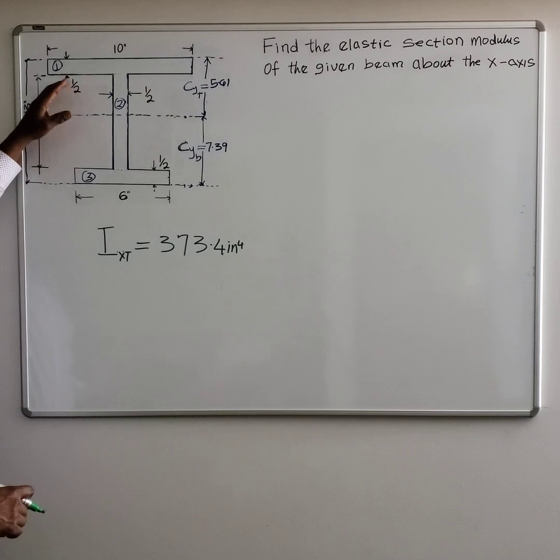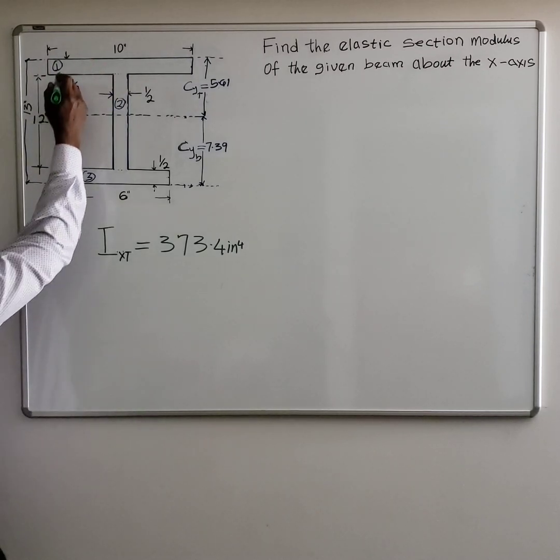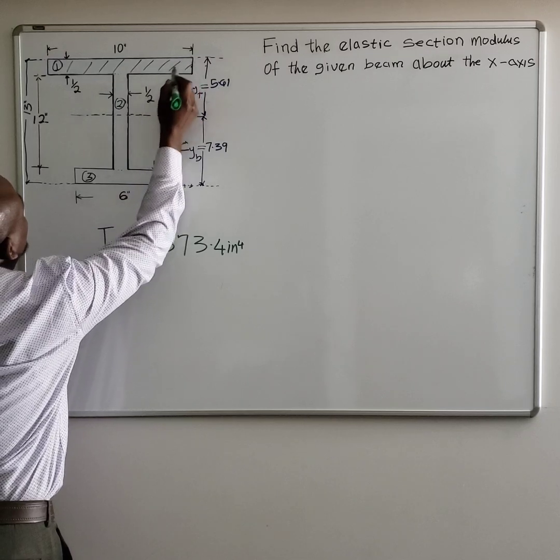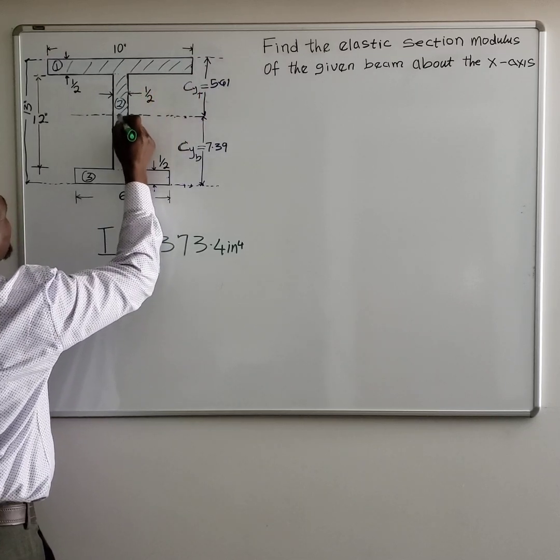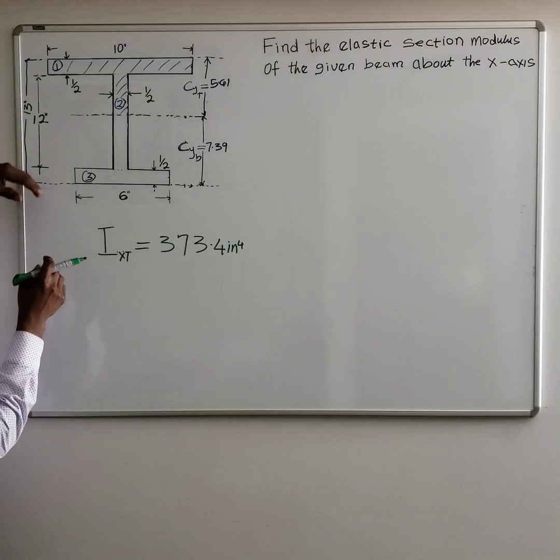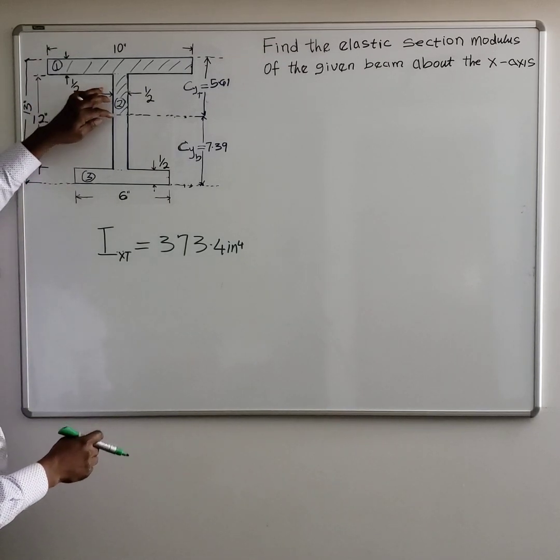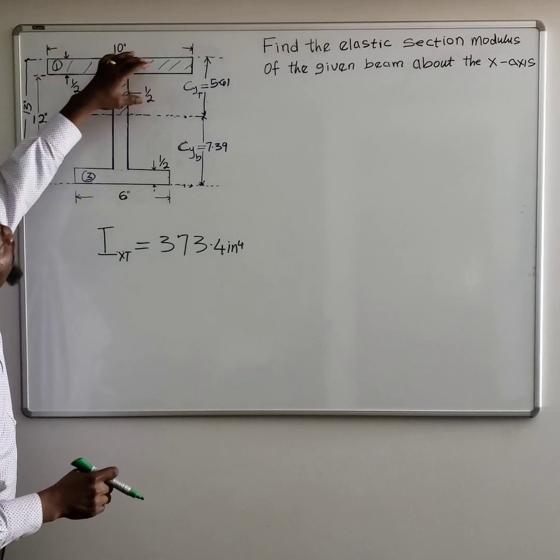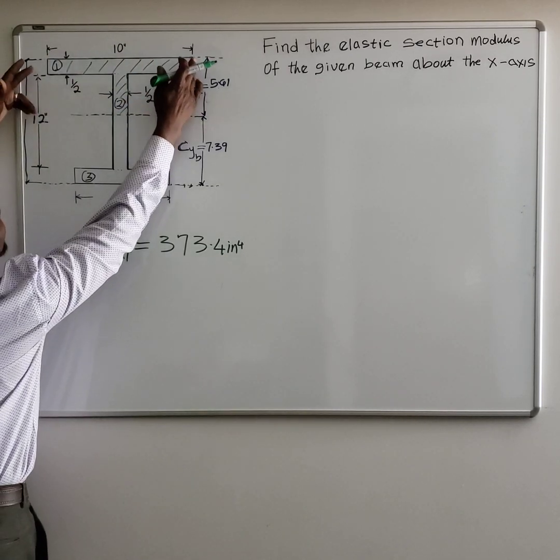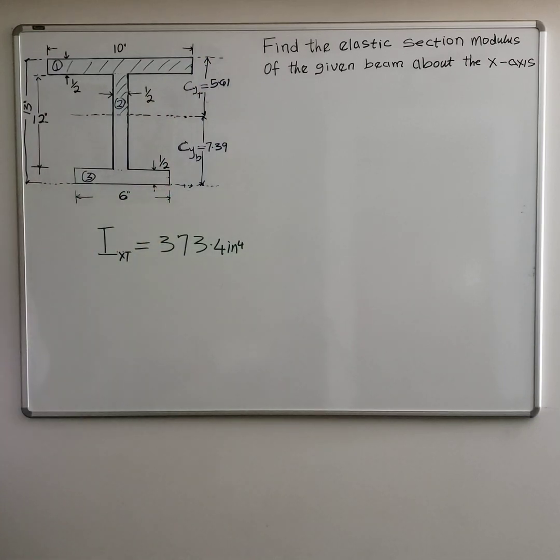In other words, if we were to divide this beam into two areas along the centroid, this area will not be equal to this area as you can see. This is 10 inches, this is only 5 inches. So as a result of that, we want to solve for the elastic section modulus.